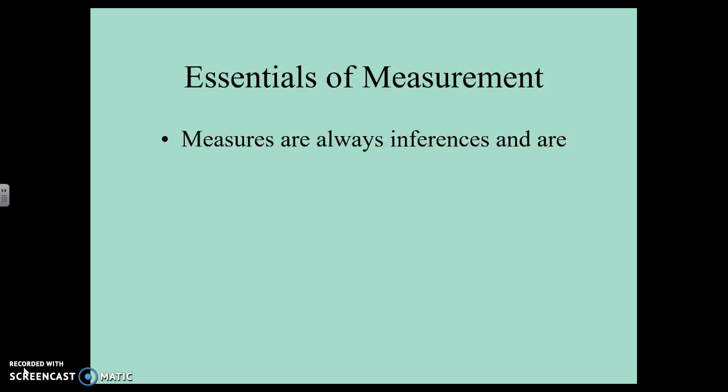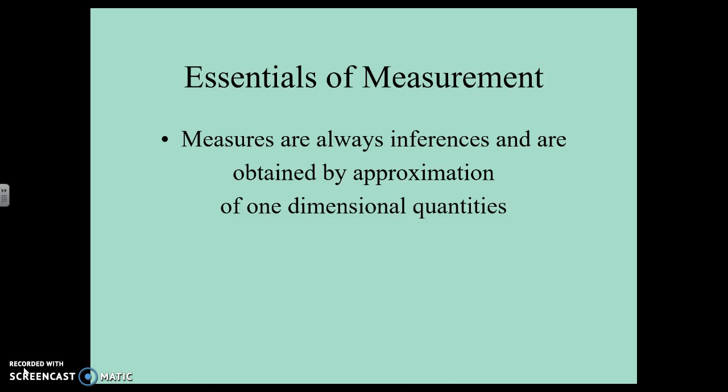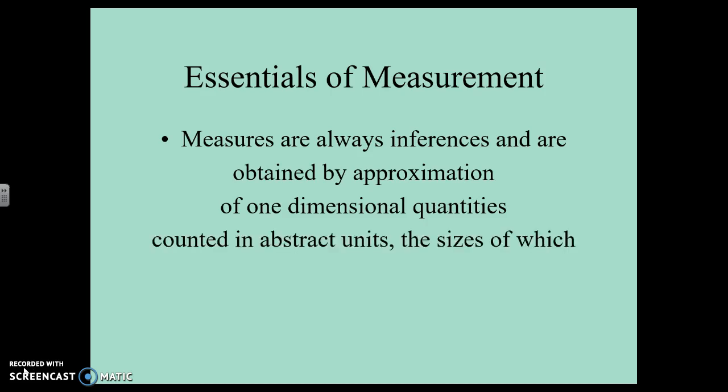Measurement is an inference. We're trying to infer something about a latent variable and we're going to attain these by approximations. We're going to give you some items that you are approximating where you fall on these different ideas, and we're going to use that to infer something about your anxiety, for example. They should be one dimension — we need to narrow it down to one specific aspect of anxiety. We're going to explain them in abstract units like the Likert scale of 1 to 4, and the sizes of that scale are unaffected by extraneous factors.